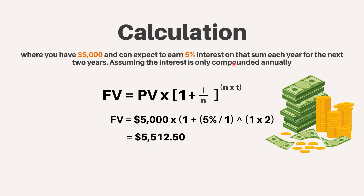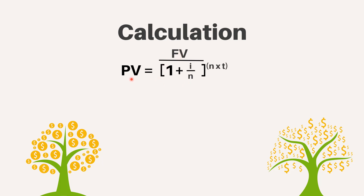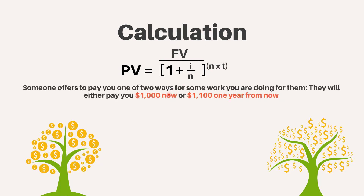The formula can also be used to calculate the present value of money to be received in the future — you simply divide the future value rather than multiplying the present value. This can be helpful in considering two varying present and future amounts. In our original example, we considered the options of someone paying you $1,000 today versus $1,100 a year from now. If you could earn 5% on investing the money now and wanted to know what present value would equal the future value of $1,100.